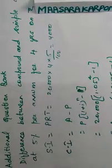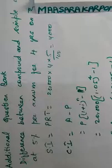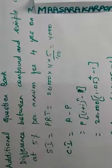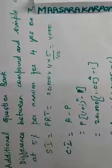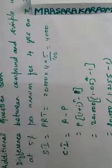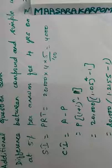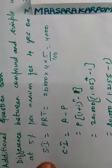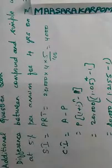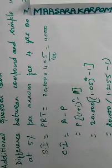₹20,000 is our principal. 5% is the rate of interest, n is 4 years. Using the simple interest formula PRT, we calculate simple interest. Then for compound interest, we use the amount formula. The difference between compound interest and simple interest is what we need to find. Simple interest gives one value, compound interest gives another — the difference between them is our answer. So interest = amount minus principal.